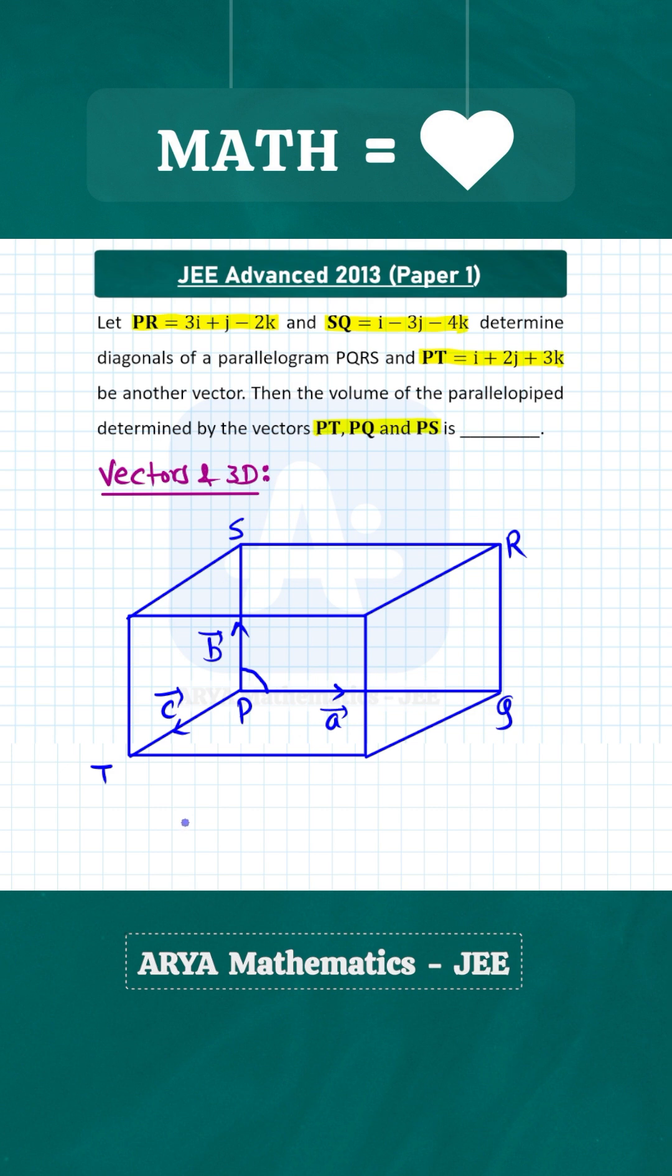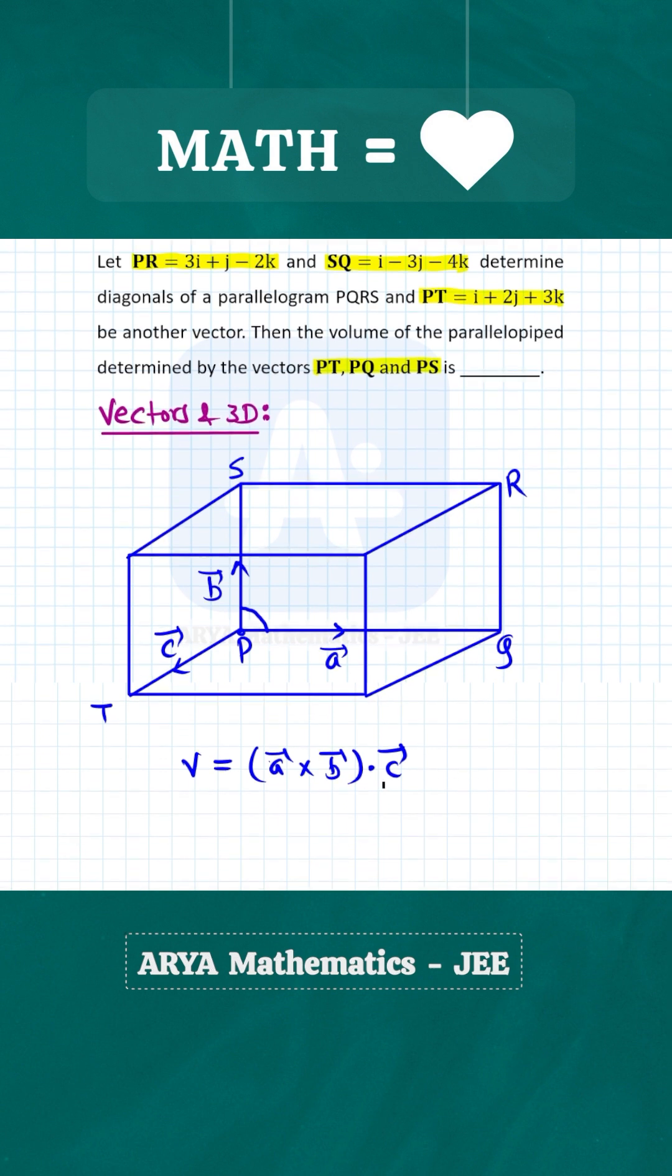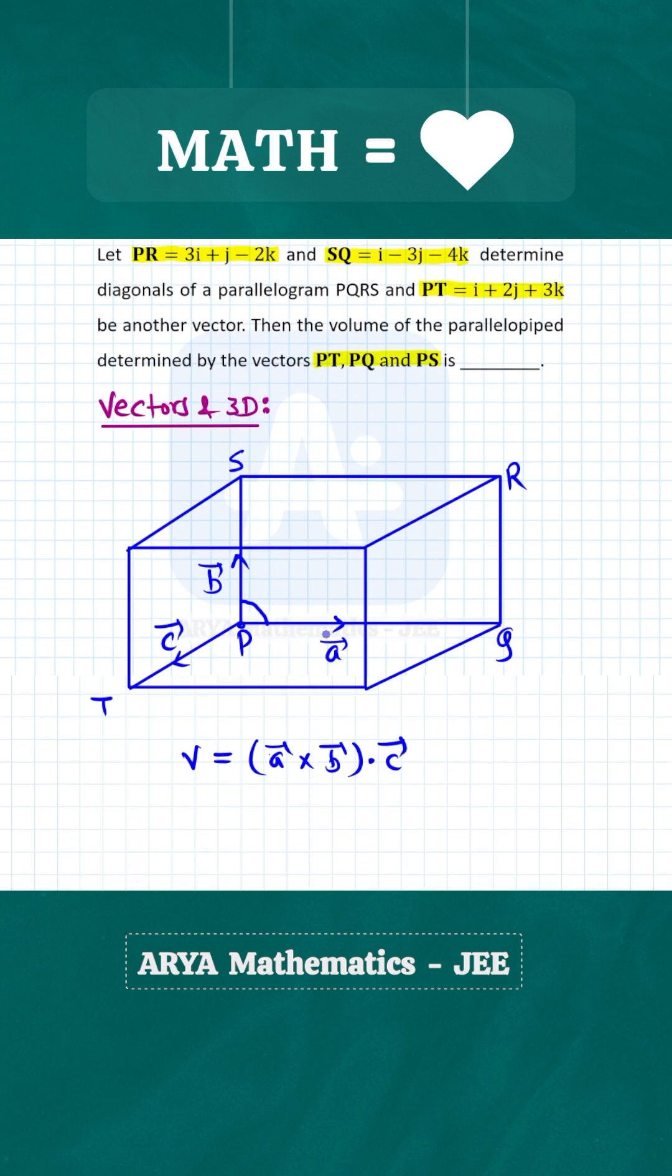So we know that volume of a parallelepiped whose three coterminous edges, meaning three sides starting from the same vertex, if they are vectors A, B, and C, then volume of parallelepiped is A cross B dot C. And obviously we'll take magnitude of this quantity because volume is always positive. Now this is the formula when the three coterminous sides are given. Right, here we are given two diagonals. Each face will be a parallelogram. So for one of the faces PQRS, instead of two sides, the two diagonals are given.